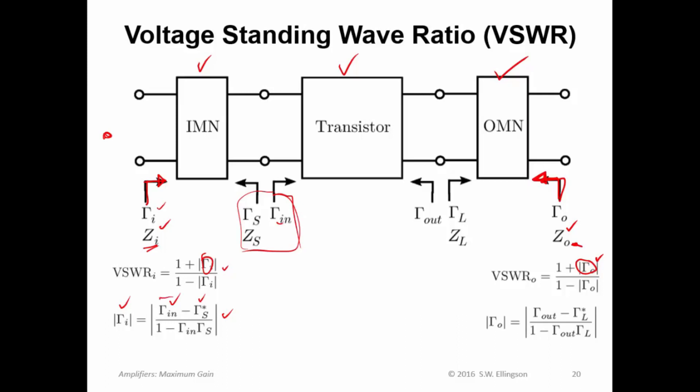and gamma sub in is the embedded input reflection coefficient here, which we already know how to compute in terms of the s parameters. So, this is a very simple way to get gamma sub in directly from parameters that we've already been working with.